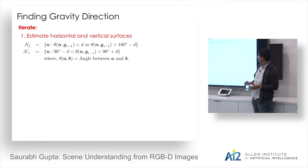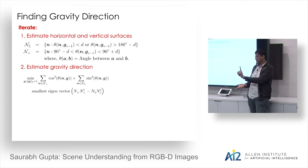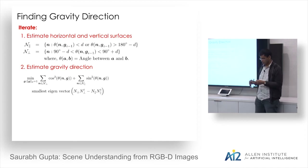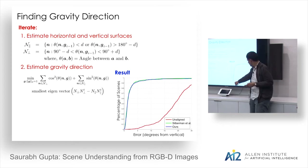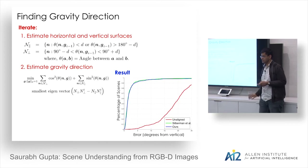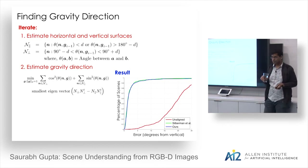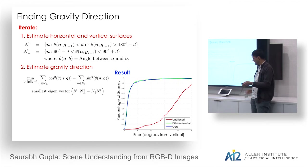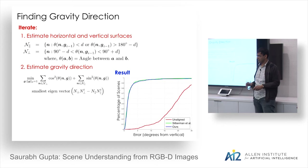The algorithm estimates horizontal and vertical surfaces and re-estimates the gravity direction by finding a vector as perpendicular as possible to horizontal surfaces and as parallel as possible to vertical surfaces. This reduces to a simple eigenvalue problem on a 3×3 matrix, and finds the gravity direction within five degrees for more than 95% of scenes. It's more robust than Manhattan world assumptions, which may not hold for all scenes.